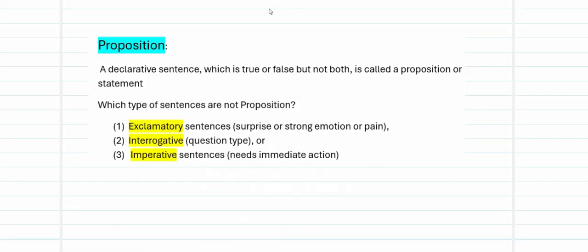What is meant by proposition? A declarative statement which is going to take either the value true or false, but not both. A statement which is declarative in nature and takes the output as true or false but not both is called a proposition. It has to either take the value true or false.